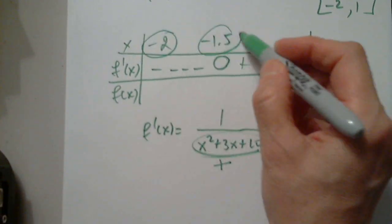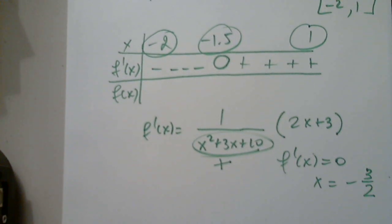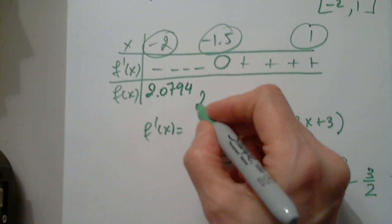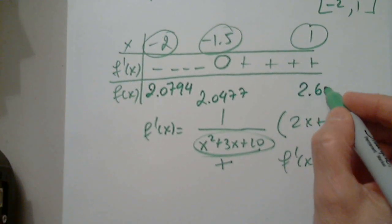So now in the function, I have to plug in these numbers. So I will go to y equals. And I will punch in natural log of x squared plus 3x plus 10. You had this problem on the previous test. And negative 2, negative 1.5, and 1. Wow. That close. Really? Okay. 2.0794. 2.0477 and 2.6391.